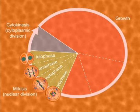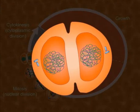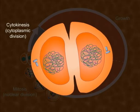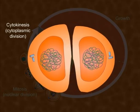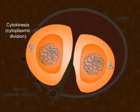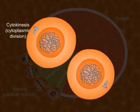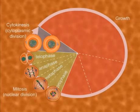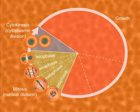After nuclear division comes the division of cell cytoplasm, also known as cytokinesis. The result of mitosis and cytokinesis is the formation of two genetically identical cells, as you can see in the picture. These cells further enter the cell cycle, causing an increase in the number of cells.